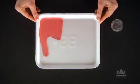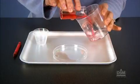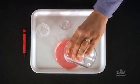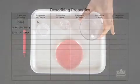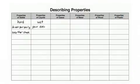Explain to students that water, milk, and orange juice are all liquids, and that although liquids can be different colors and have different smells, liquids all have several properties in common. All liquids are wet, pour easily from one container to another, and take the shape of their container. Record these properties on the Describing Properties chart under the heading Properties of Liquids.